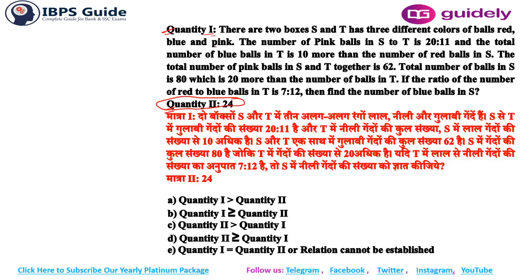There are two boxes S and T, each having three different colors of balls: red, blue, and pink. The number of pink balls in S to T is 20 to 11 — that is the point to be noted. The total number of blue balls in T is 10 more than the number of red balls in S. The total number of pink balls in S and T together is 62.